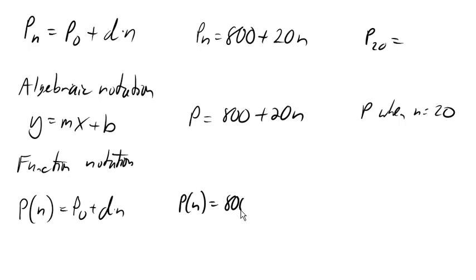Now we read this as P of N, or P at N. Or in other words, this is the population at a value for N. In other words, this is the value that goes in there.